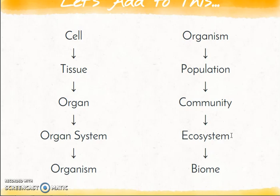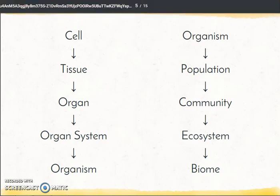Ecosystems put together make a biome. A biome represents different areas of the planet, such as forests, deserts, or oceans. We're going to look at these a little more specifically.